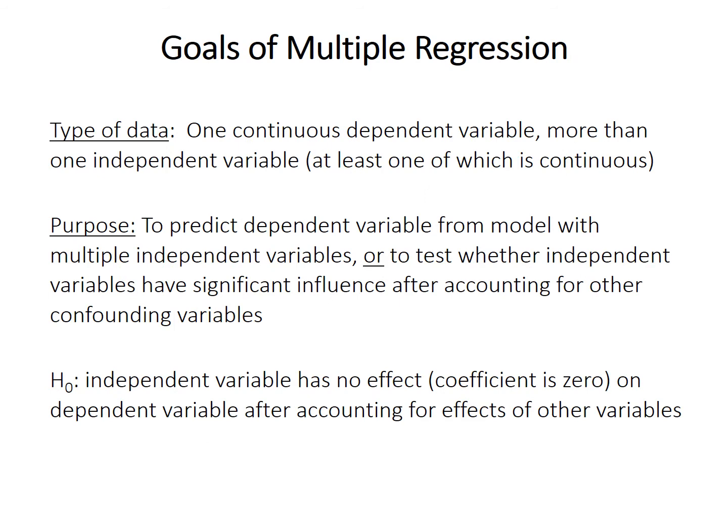So what are the goals and the requirements of multiple regression? The dependent variable — the one you want to predict, or the one being influenced by the others — must be a continuous variable. And in this case, there are multiple independent variables, at least one of which has to be continuous. But there can be a mix of continuous and categorical predictors or independent variables.